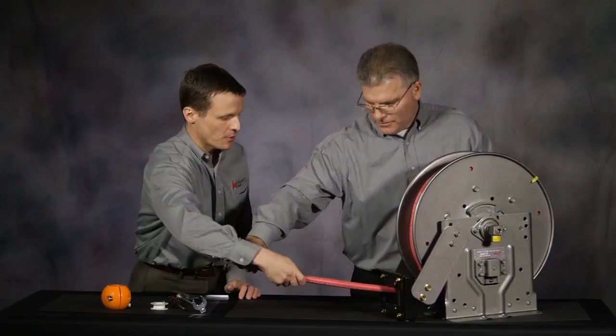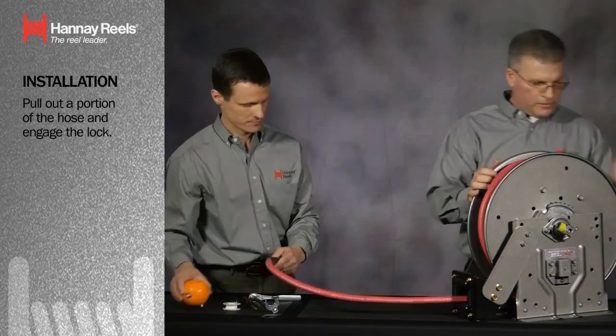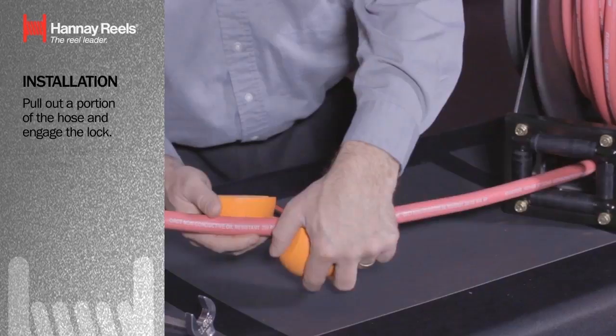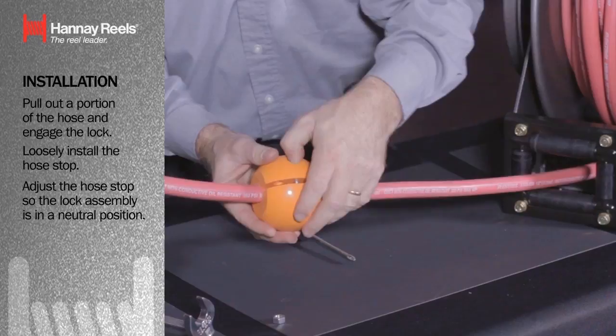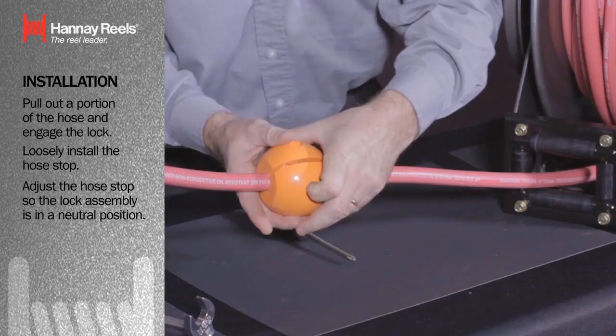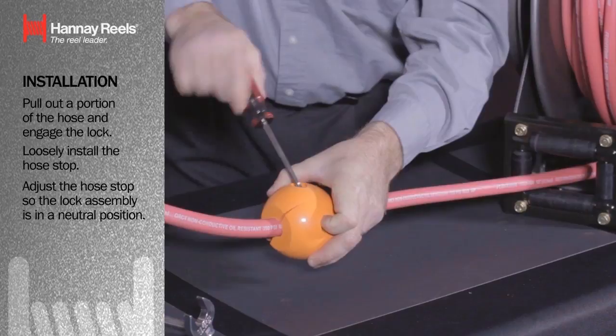You'd like me to hold that, I imagine? We're going to get ready to install the hose stop. At this point, it's safely locked. I'll give you the hose stop and a Phillips screwdriver. Now just keep in mind, when we put the hose stop in place, we're going to time the stop with the spool. When I mean time the stop with the spool, when the hose stop bumps up against that roller, we want the lock assembly to be in the neutral position.